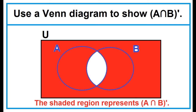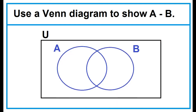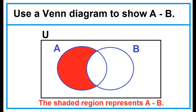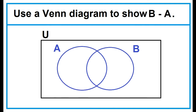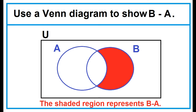Use a Venn diagram to show A minus B. The difference of two sets is the set of all elements of A that are not elements of B. The shaded region represents A minus B. How about B minus A? The shaded region represents B minus A.